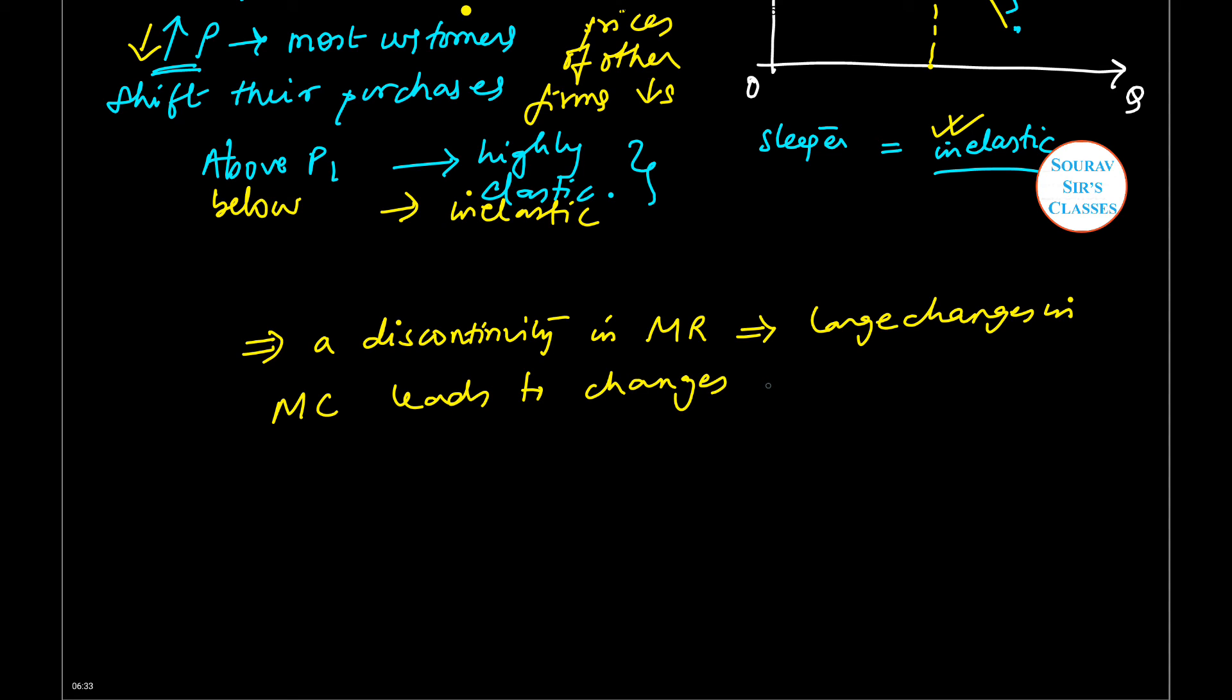However, the limitation - we must speak about the limitation. We see that the model does point out price rigidity, but the model does not explain how the rigid price is determined. We have got P1 value, but how we are getting the P1 value, we don't know. So the model does not provide this explanation. This will be the limitation.